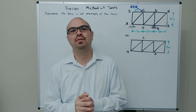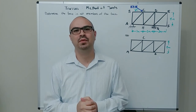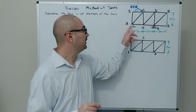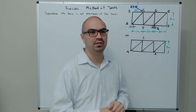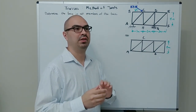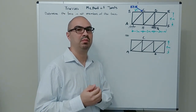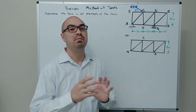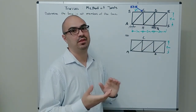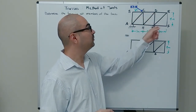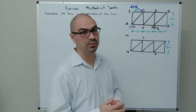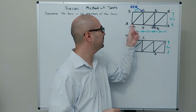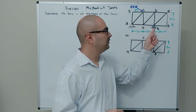Usually the first step to solve truss problems is to solve for the forces generated at the support — the reactions. I say generally because sometimes, depending on which members you're trying to solve, you might be able to skip that step. In this problem, since we're solving for all the members, we need to start with solving for the support reactions at A and G.